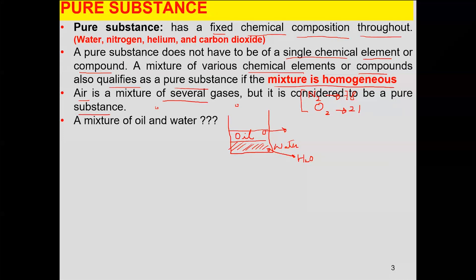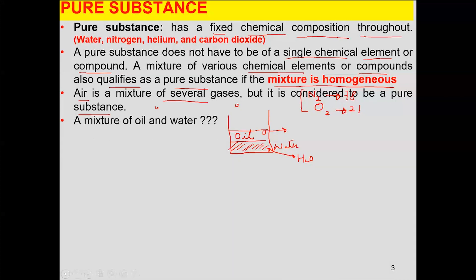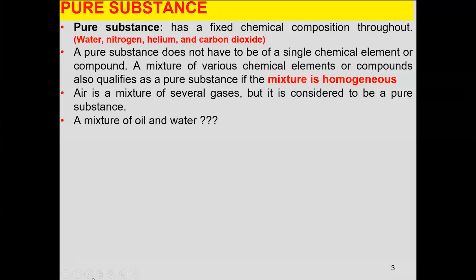A student asks whether there are standard references or tables to decide if a substance is pure. The instructor clarifies that the definition itself is the standard — it is based on chemical composition. If nitrogen's average proportion is 78% in any area, and that remains consistent, it satisfies the definition. The instructor also addresses the distinction between pollution and impurity in this context.